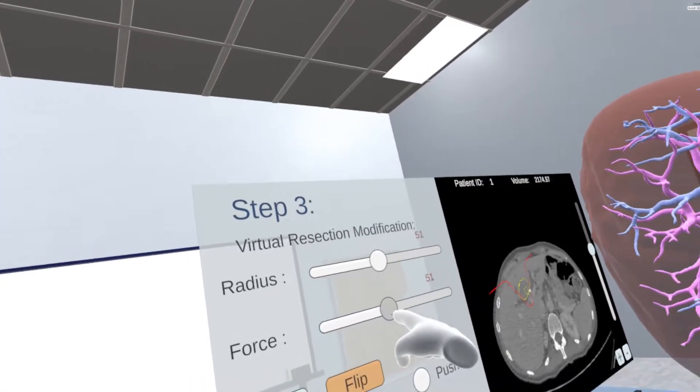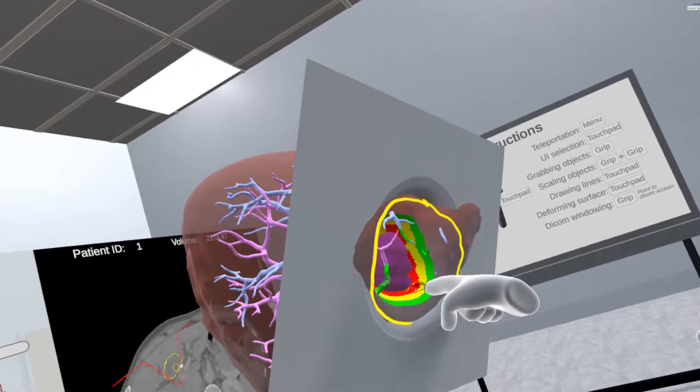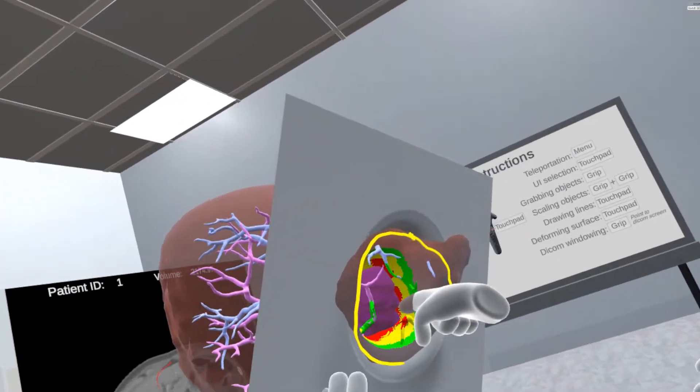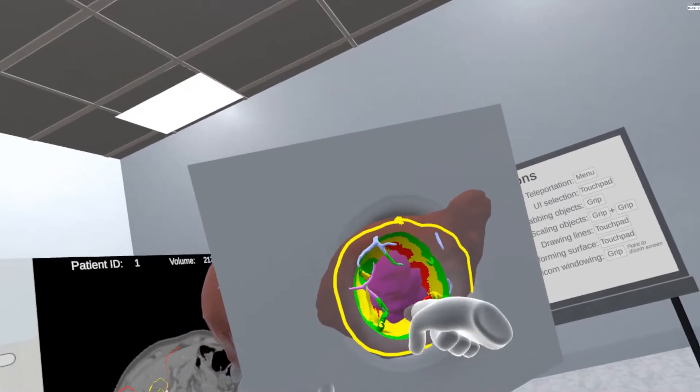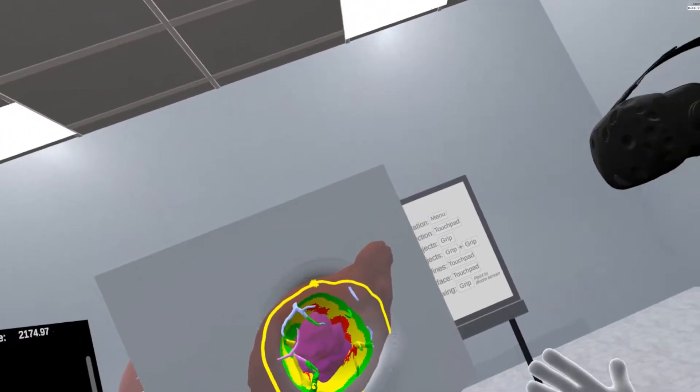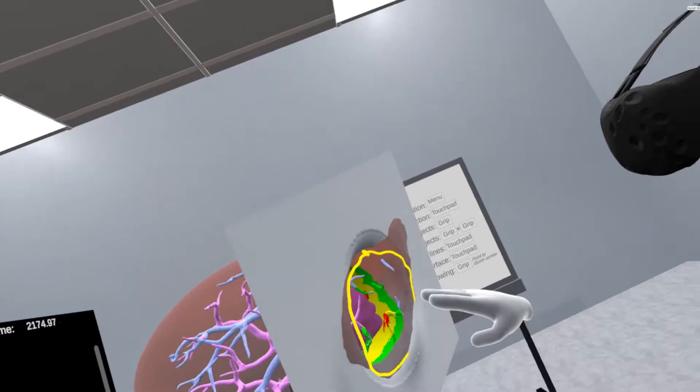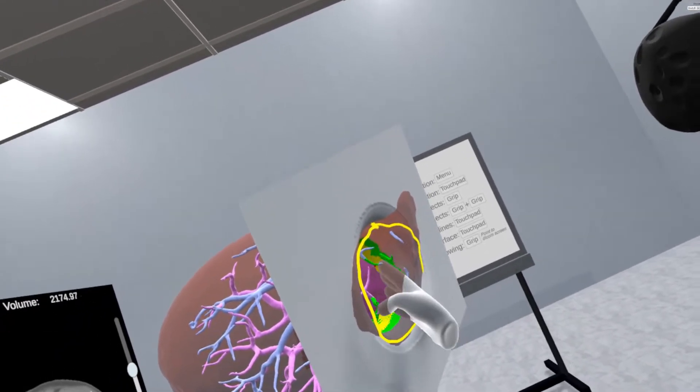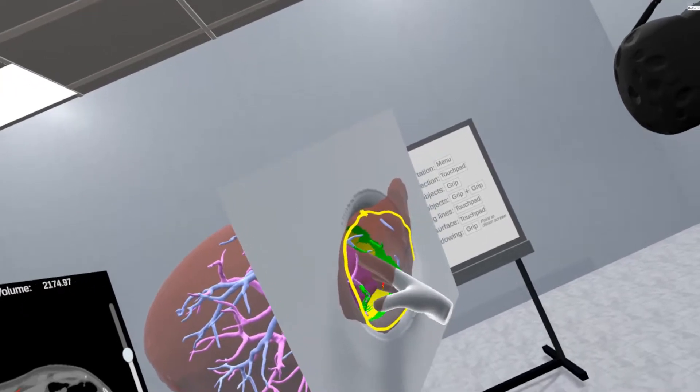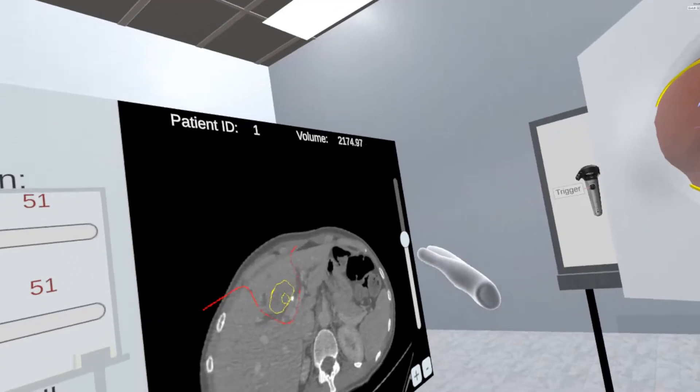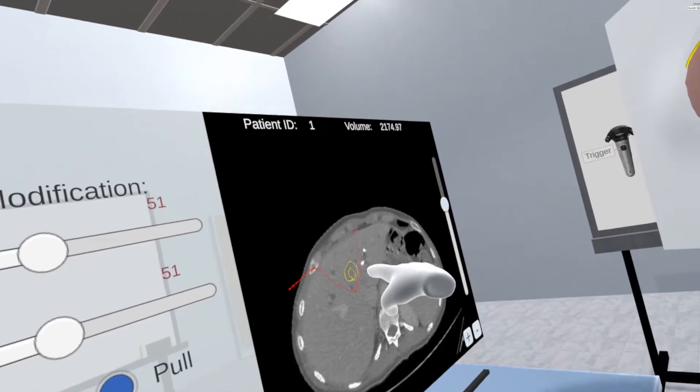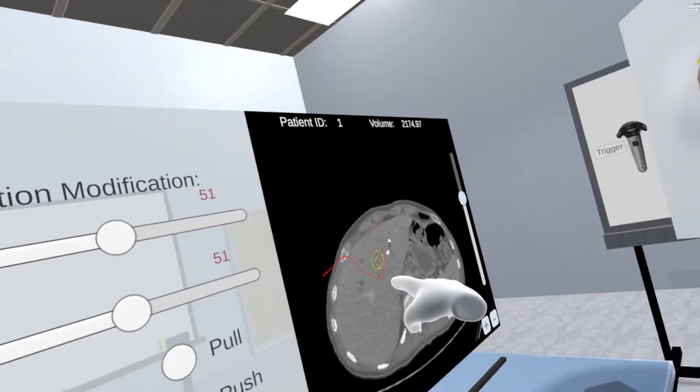For modification, various options are provided for the users to refine the resection surface. Real-time risk maps visualization from the resection surface to the tumor are displayed for visual feedback. The idea is to provide support for the planning to keep the safety margin around the tumor. The system also allows modification on the 2D view and the modification is synchronized for both representations.